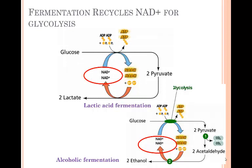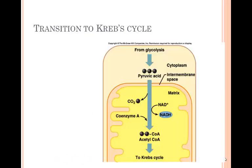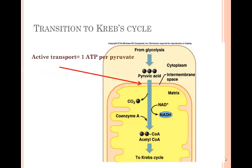If a cell is within an environment with oxygen gas, the cell will use aerobic respiration. This occurs in the mitochondria. The pyruvates made in glycolysis are transported into the mitochondria via active transport. The cost is 1 ATP per pyruvate.